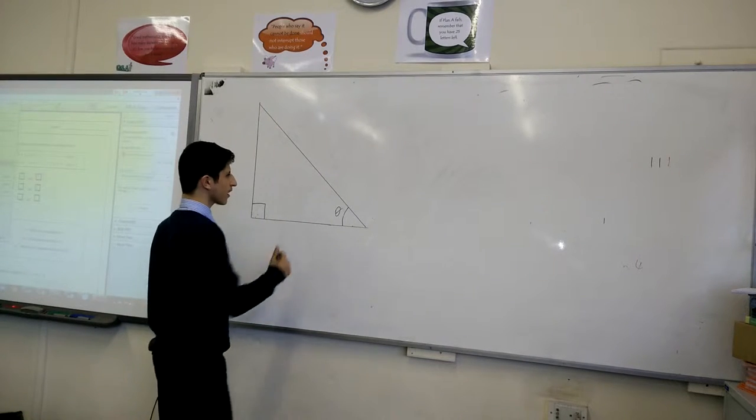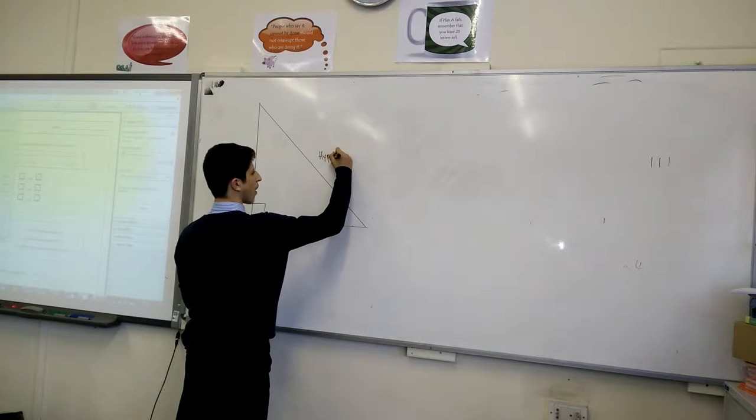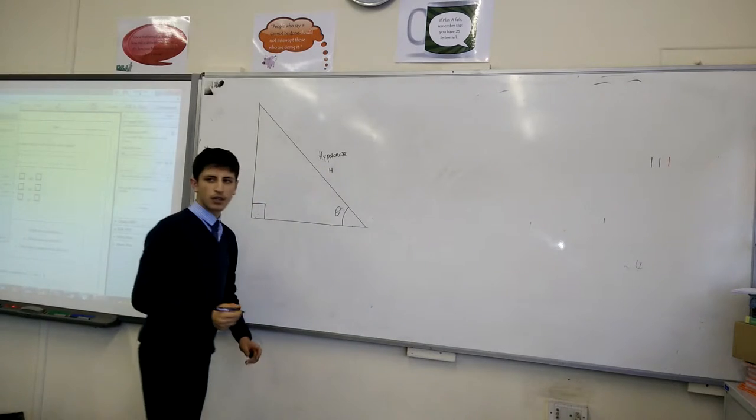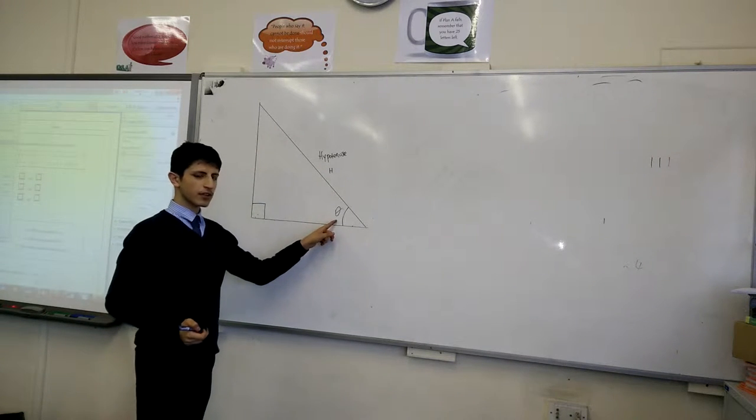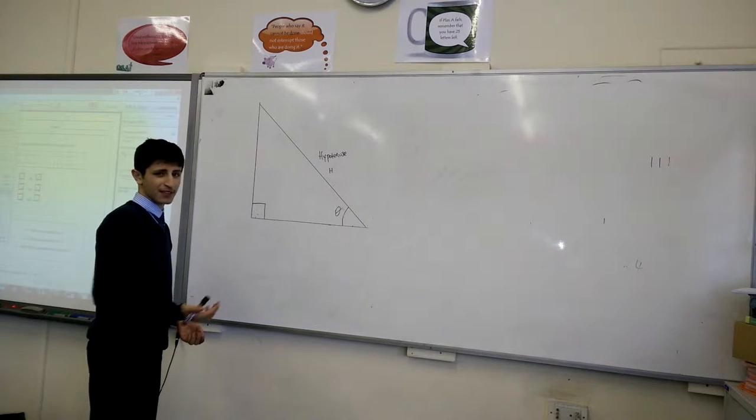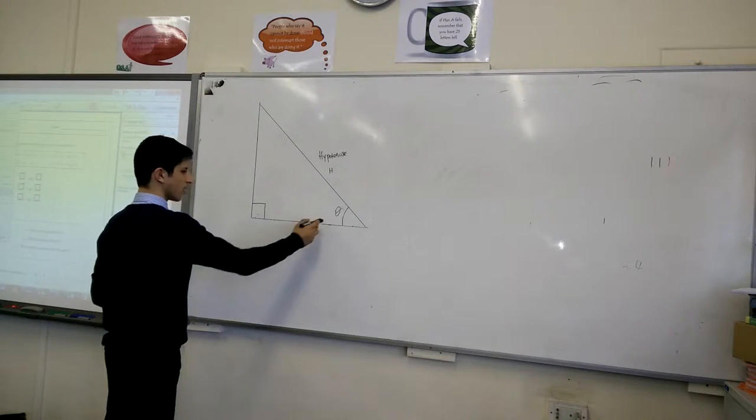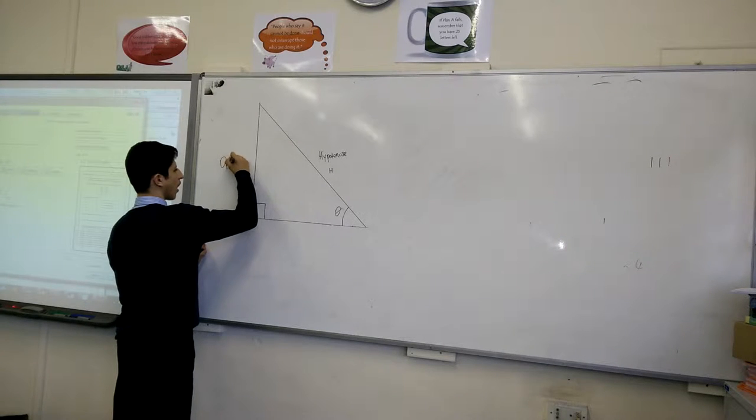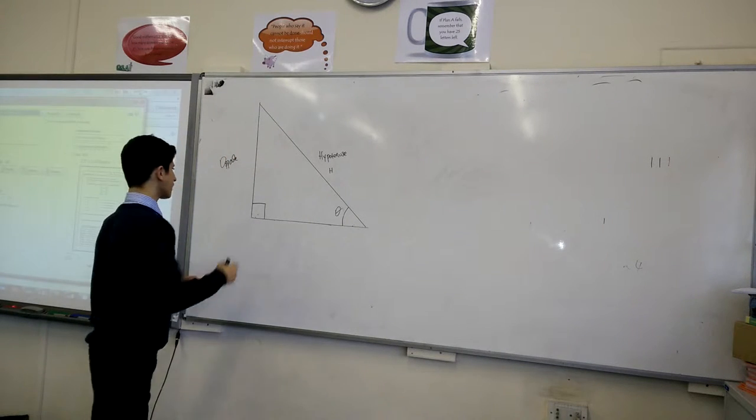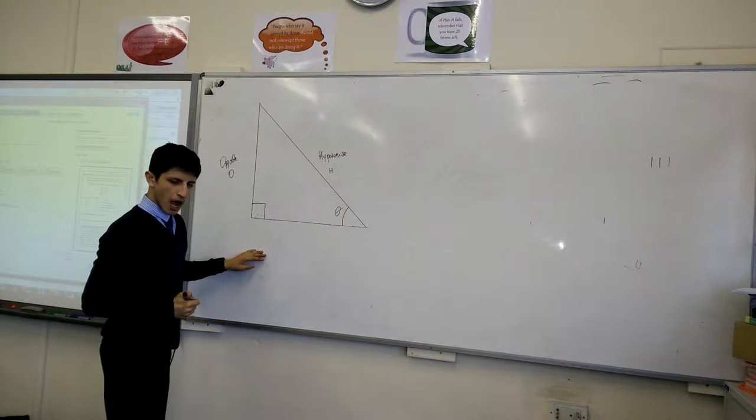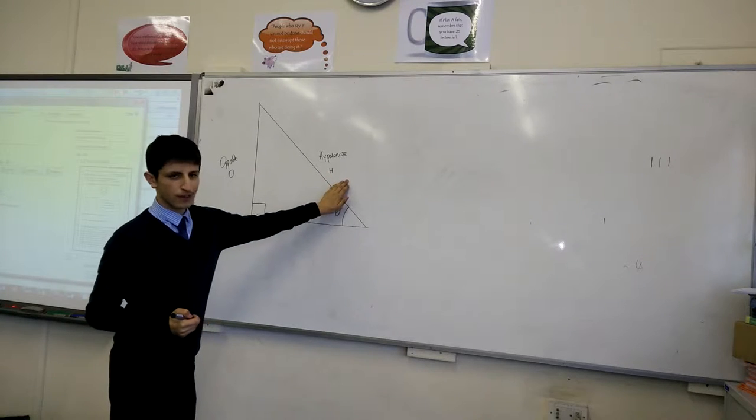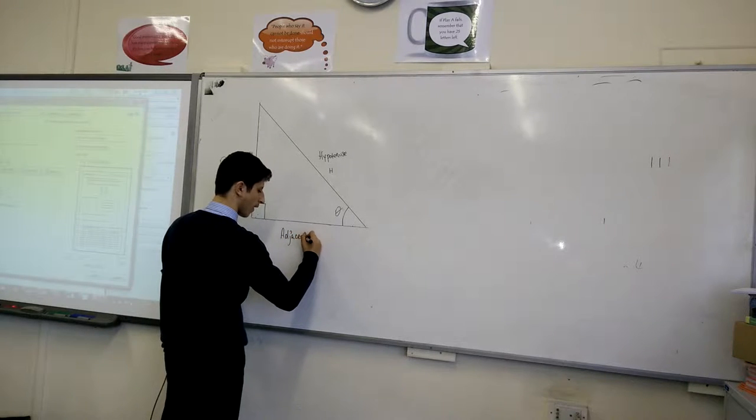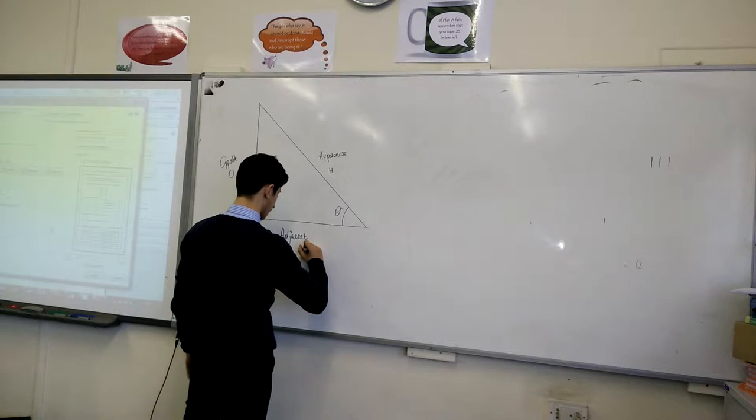This side here, you know from my Pythagoras theorem, the longest side is called the hypotenuse. You may now start to use the symbol H. Now you have an angle here. This angle is called theta. Theta is actually a Greek symbol for an angle. It's much easier to write this instead of the angle itself. The side opposite to the angle is called the opposite, and we give it the symbol O. Now this side here, the side that's not opposite nor hypotenuse, it's called the adjacent. And we give this the letter A.